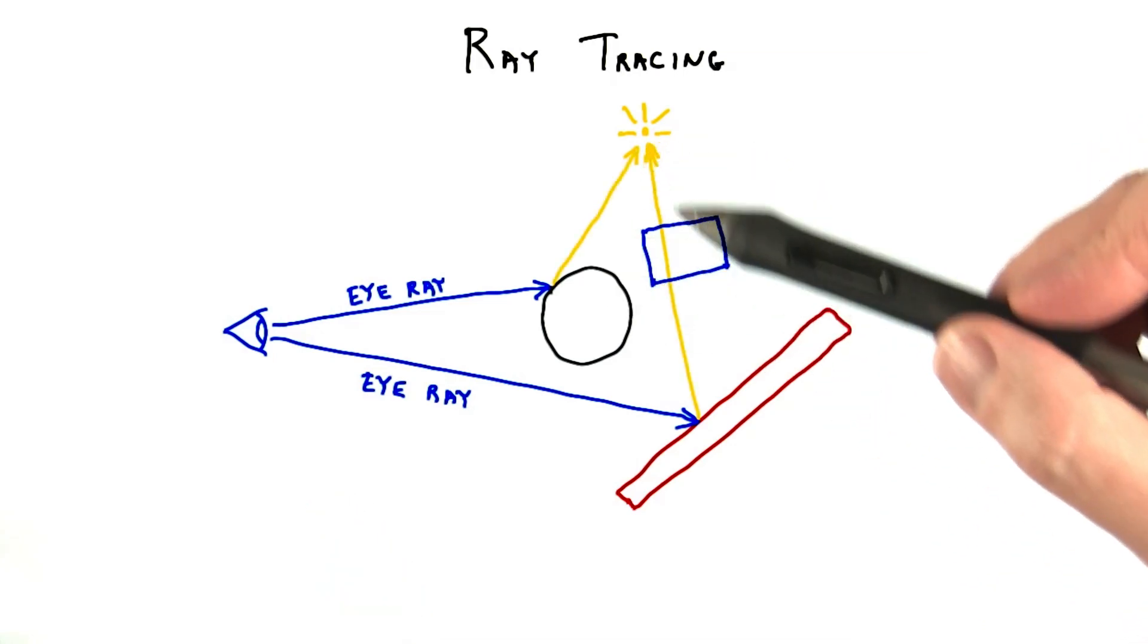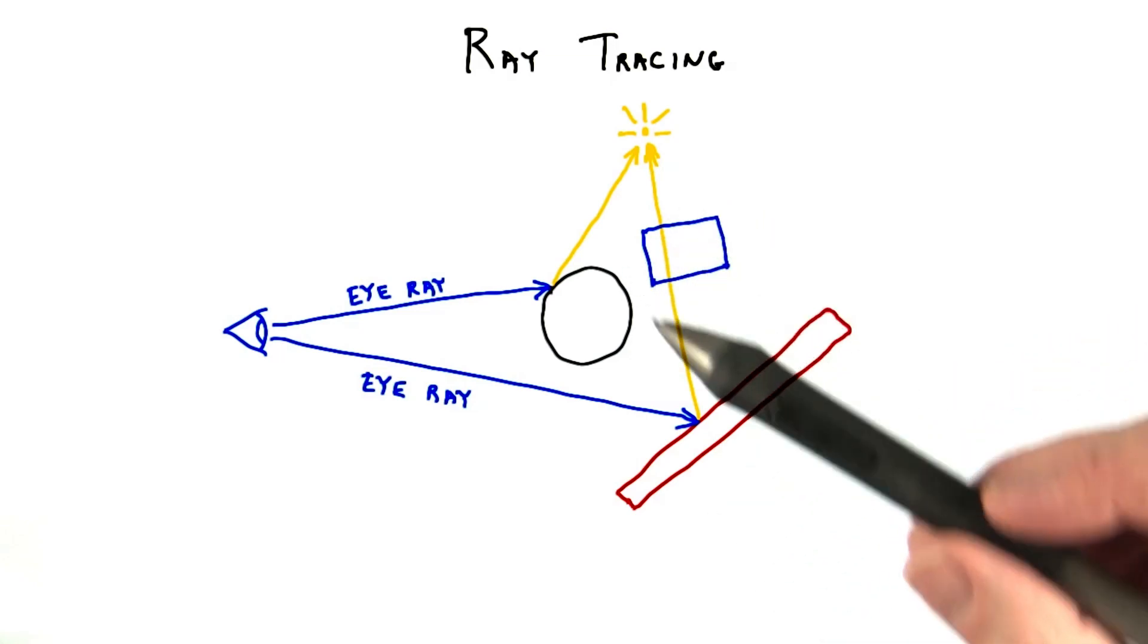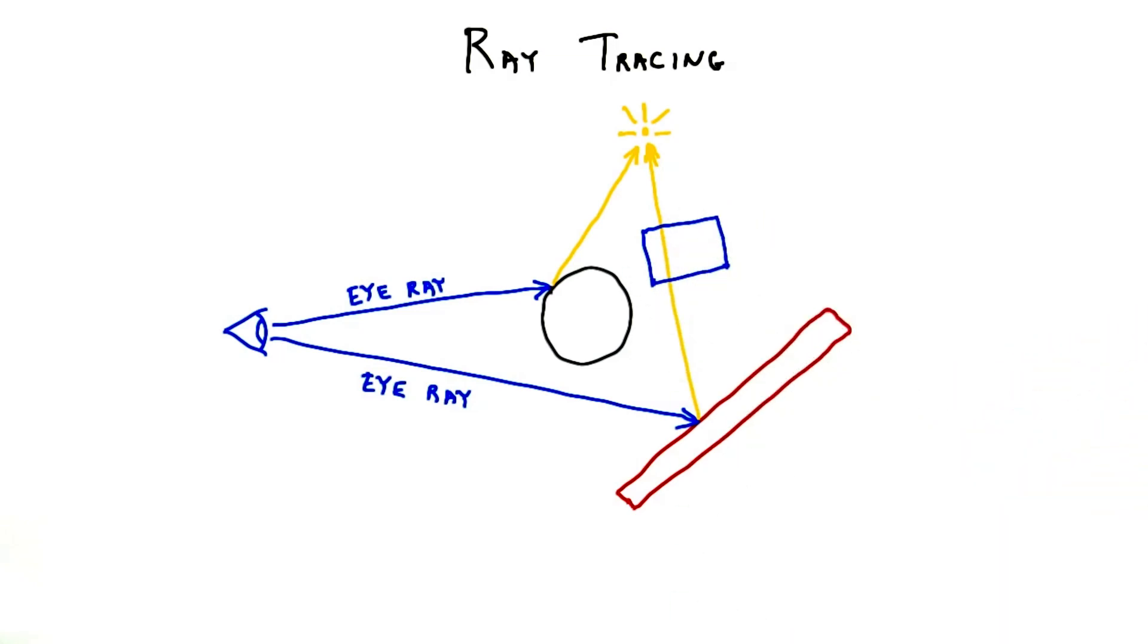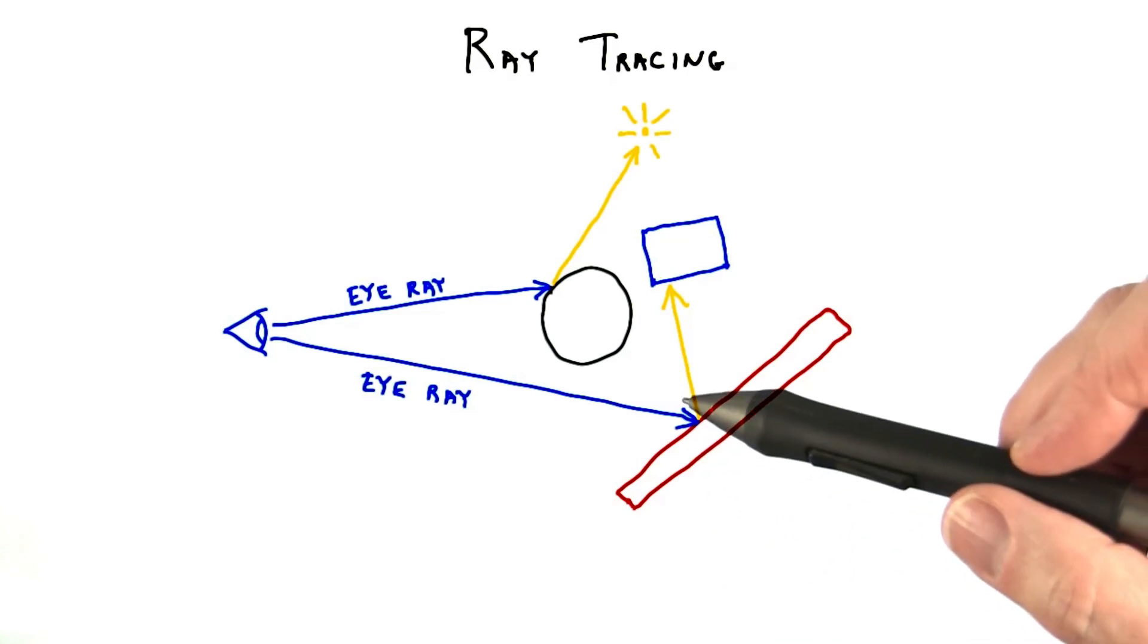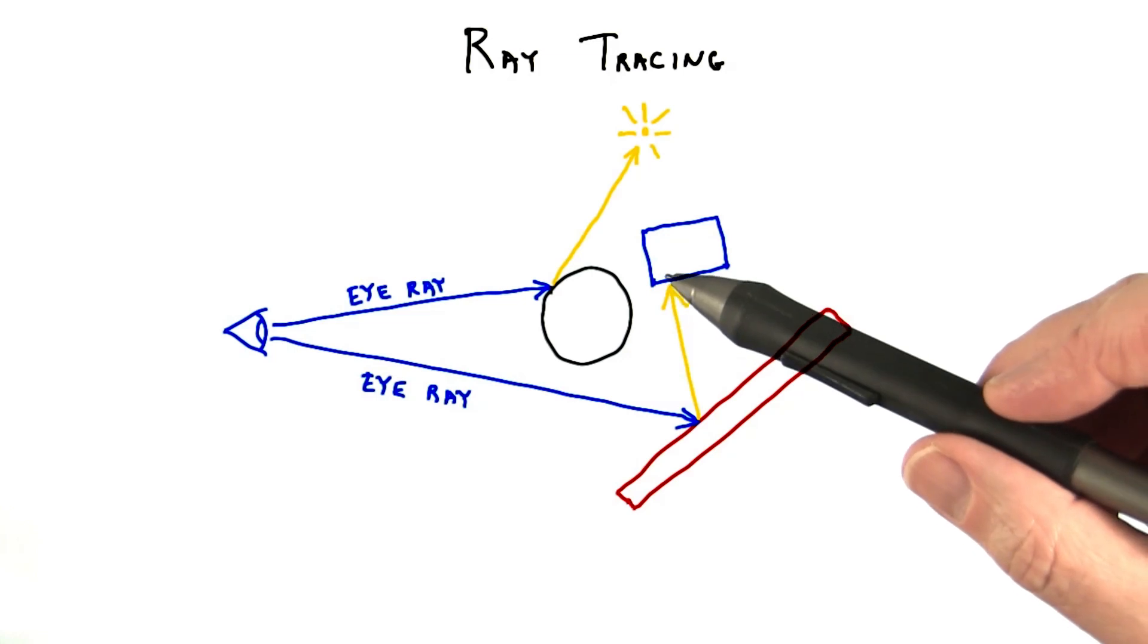For the light to surface paths, we've made one obvious simplification for basic rasterization. Objects don't block other objects. In other words, no shadows are cast. In ray tracing, adding basic shadows is trivial. Shoot a ray from the surface to the light. If there's something in the way, the light is blocked and can be ignored.